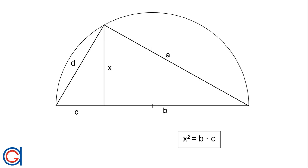In other words, the geometric mean of b and c is x. Now we are going to demonstrate that this theorem works because the three triangles that we create when we draw the perpendicular height are proportional to each other. In other words, they have the same angles.